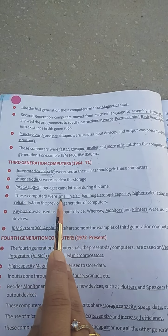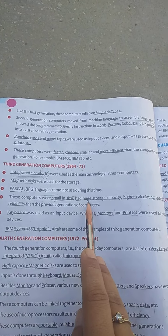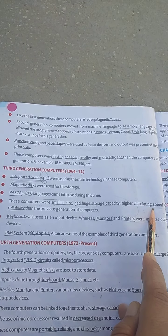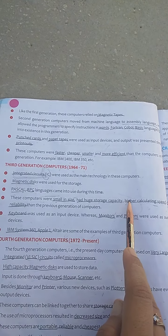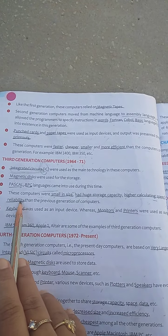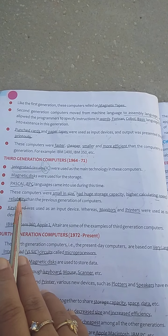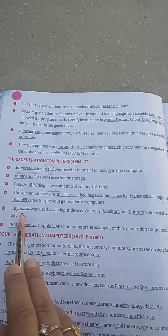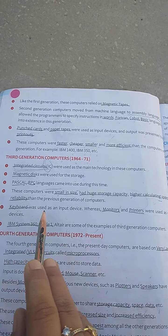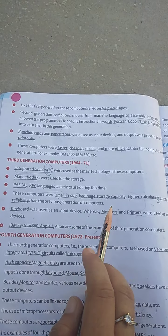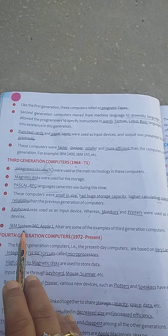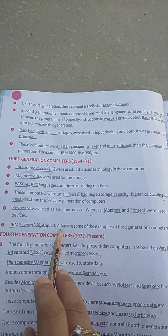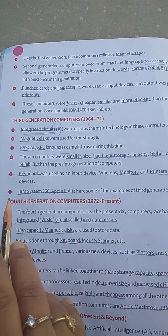These computers were smaller in size, had huge storage capacity, and higher calculating speed compared to first and second generation. They were more reliable and more accurate. Input devices used were the keyboard, and output devices were monitors and printers. Examples of this generation are IBM System 360, Apple I, and Altair.